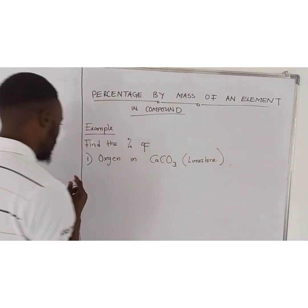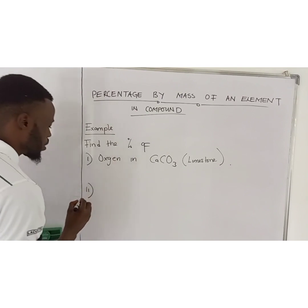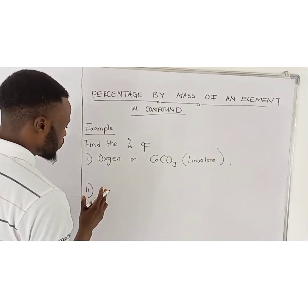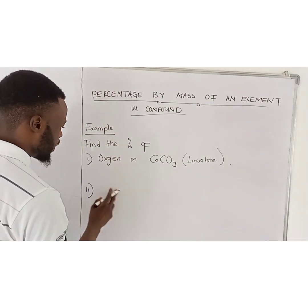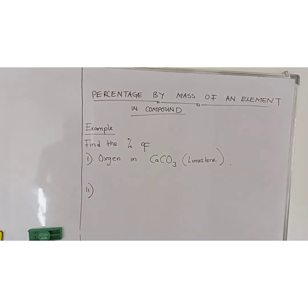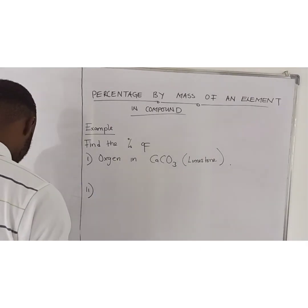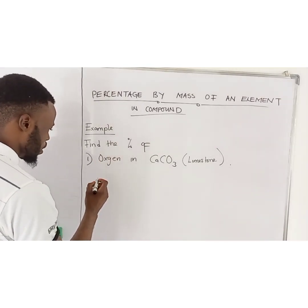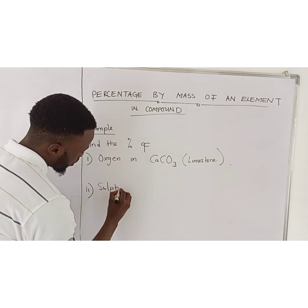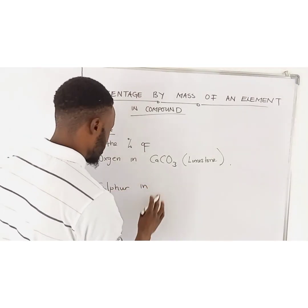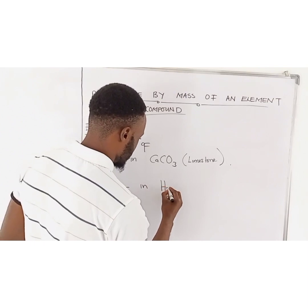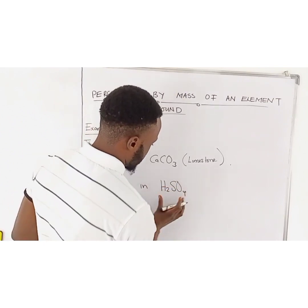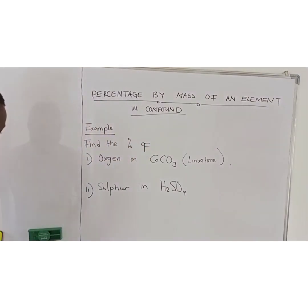Limestone. Then number two, we are finding the percentage of oxygen in another compound. Just three examples. We are also saying: find the percentage of sulfur in sulfuric acid. This is an industrial acid. Three examples.